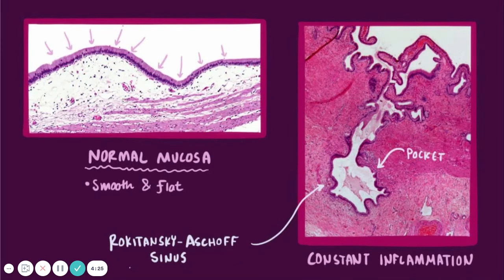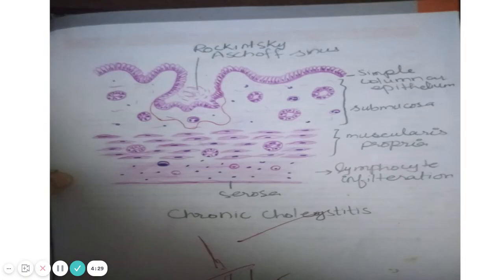The normal mucosa is smooth and flattened. In the other picture, there is constant triggering of inflammation and pocket formation — that is Aschoff sinus. This is the picture which you have to draw in your practical copies. As you can see, there is lymphocytic infiltration and Aschoff sinus formation.